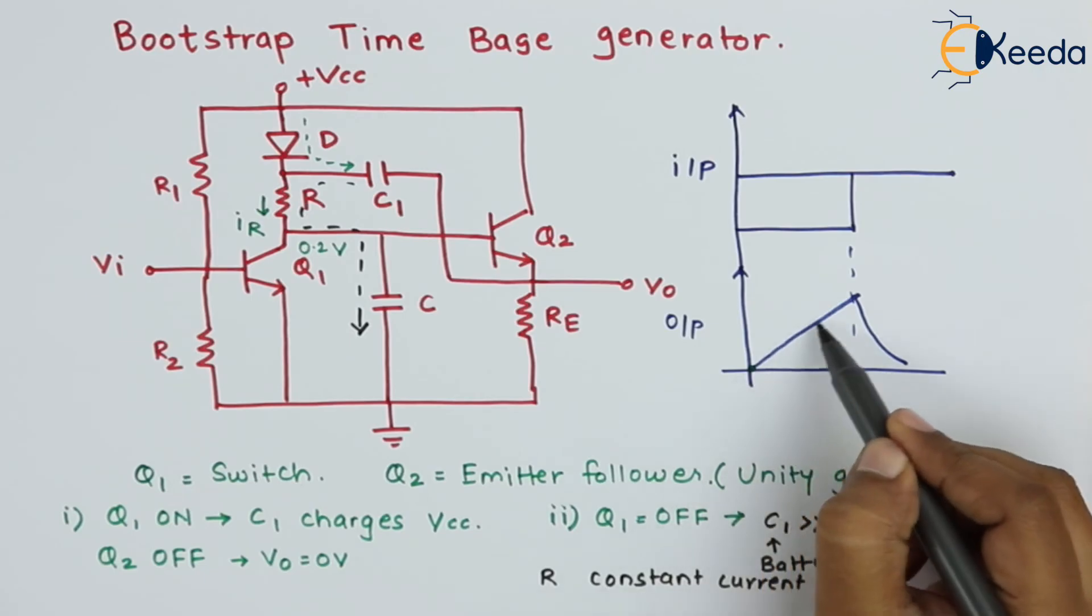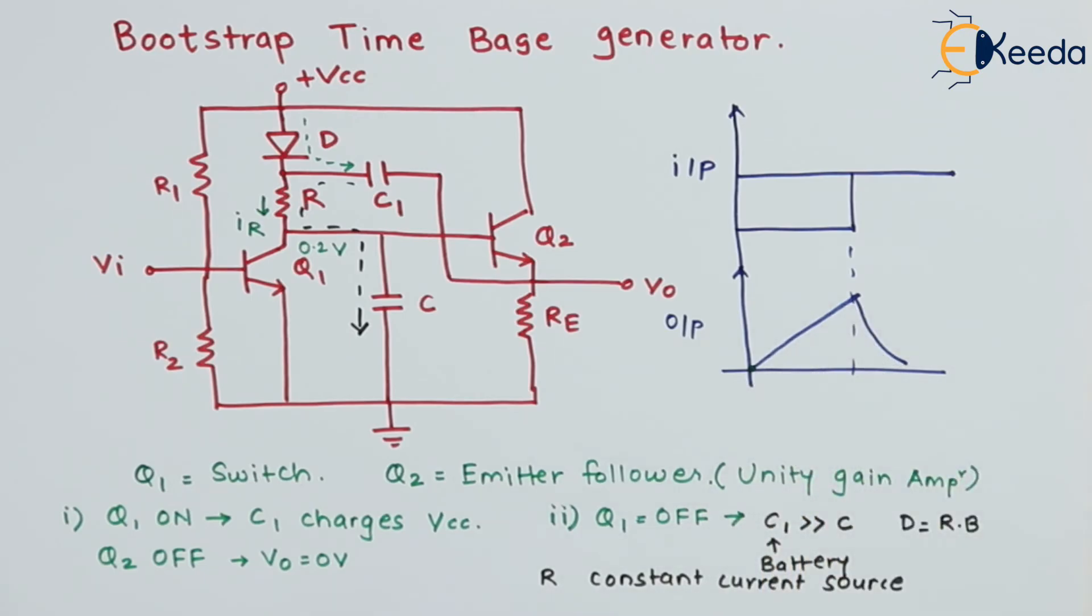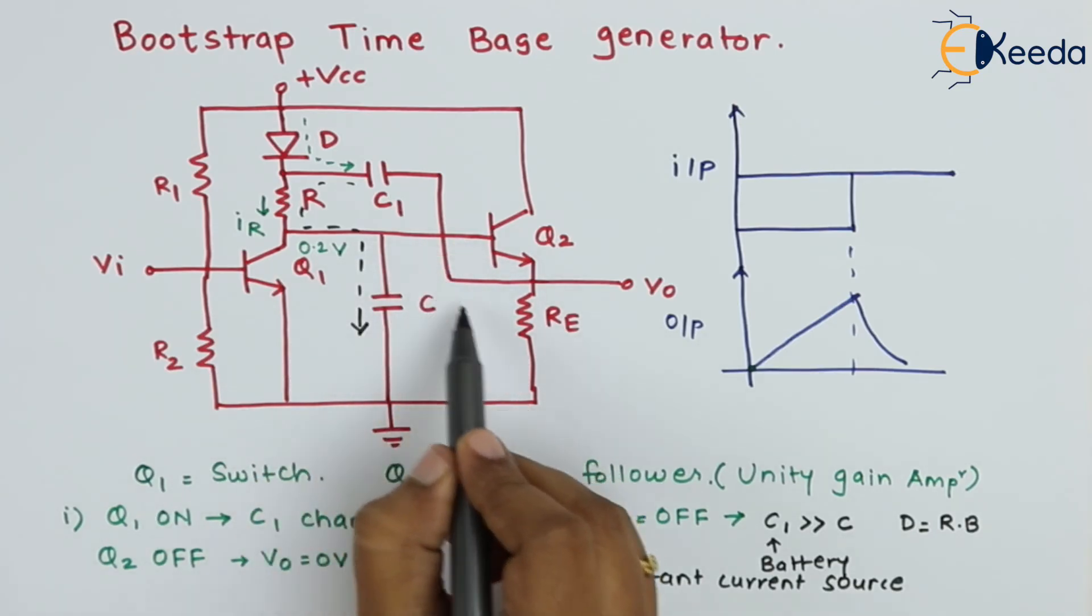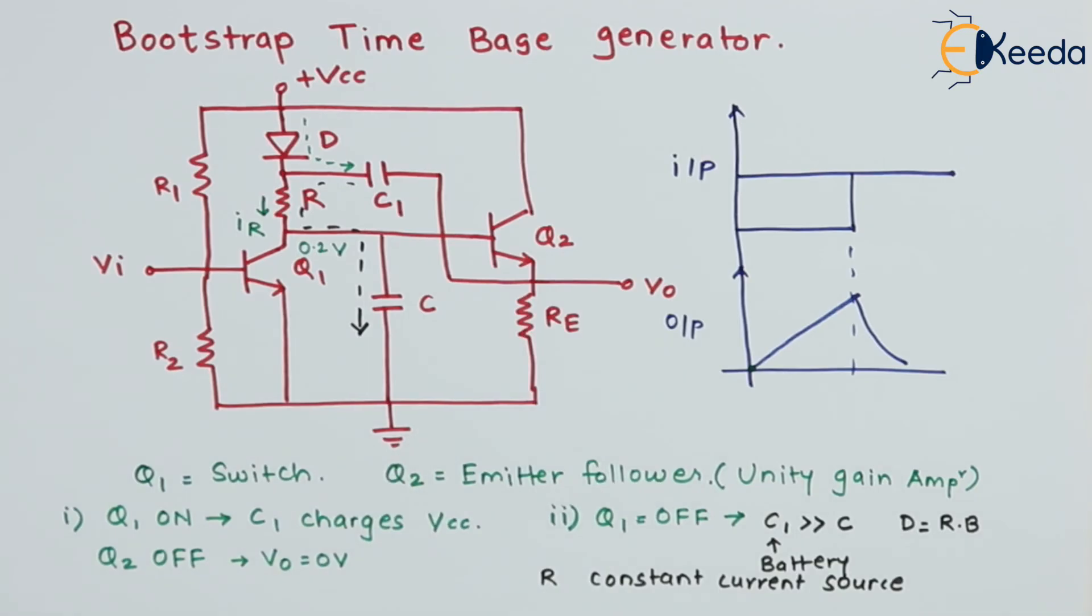So this is the linear voltage which indicates that the capacitor voltage linearly increases, which is given to the base, and the same voltage is available at the output terminal.